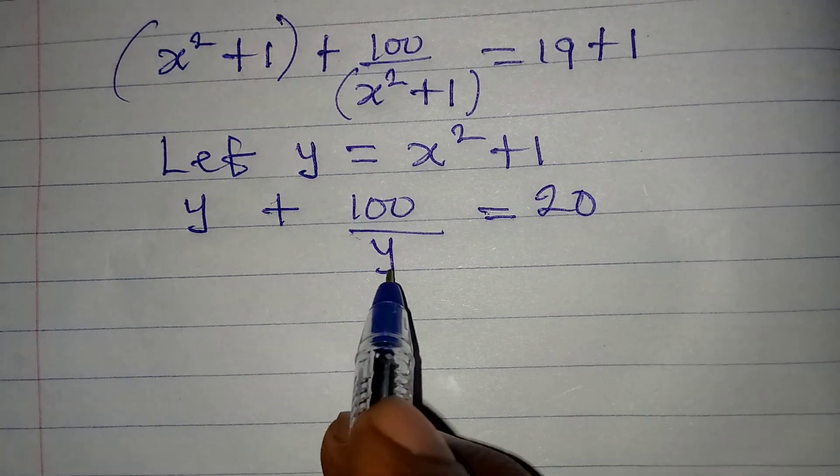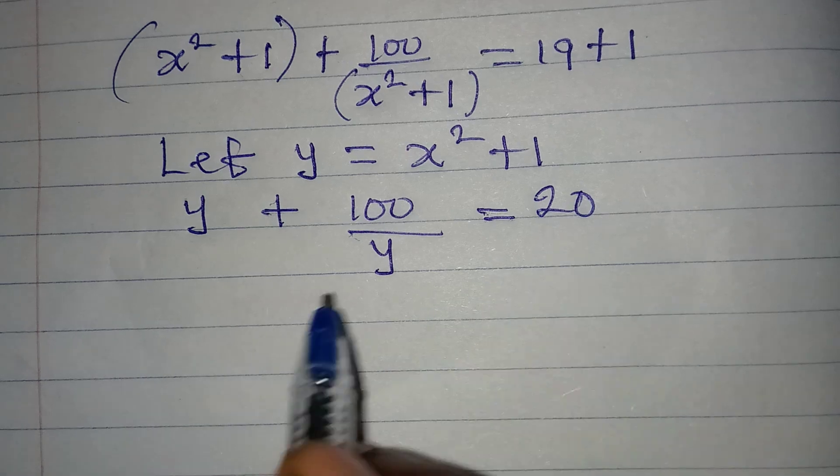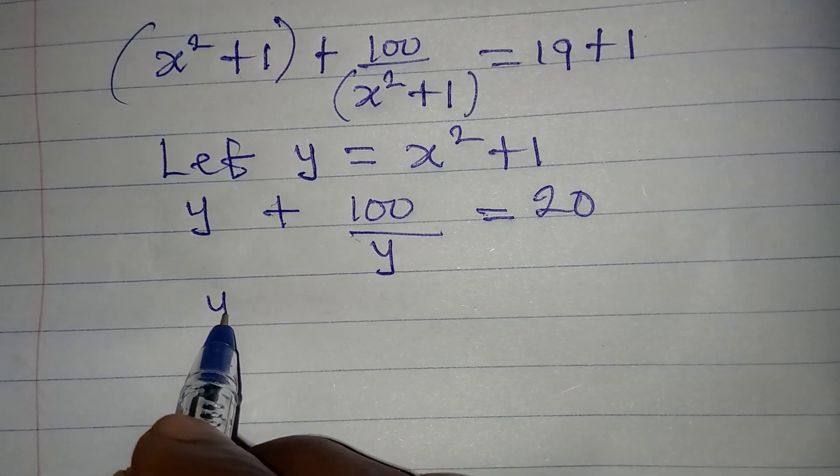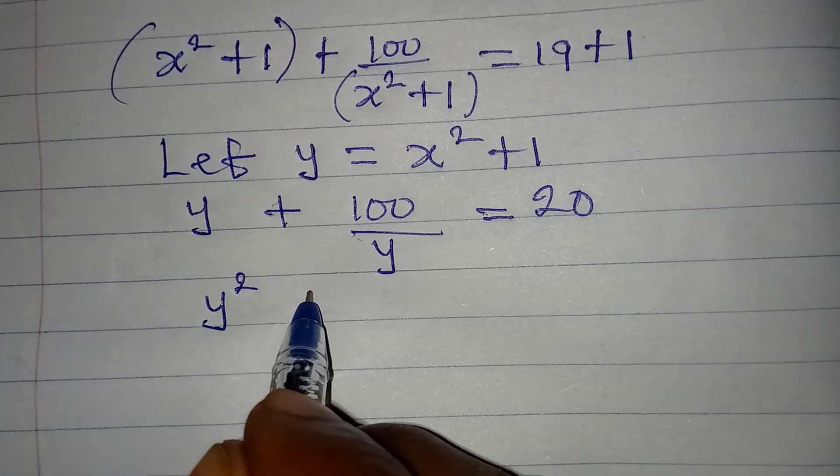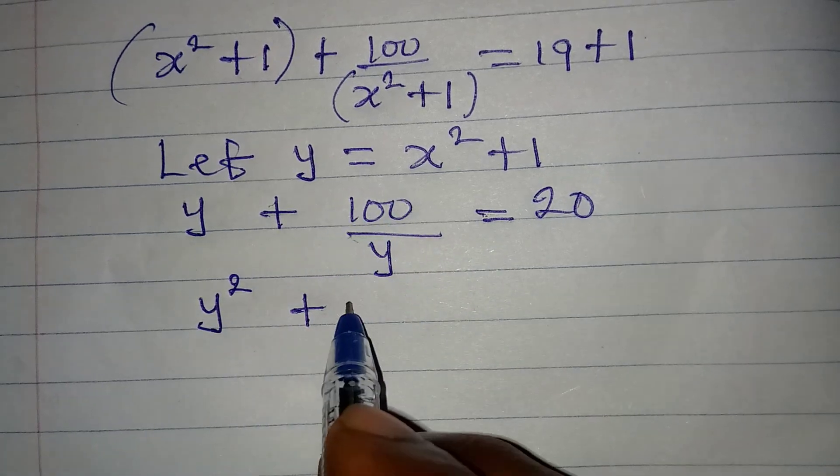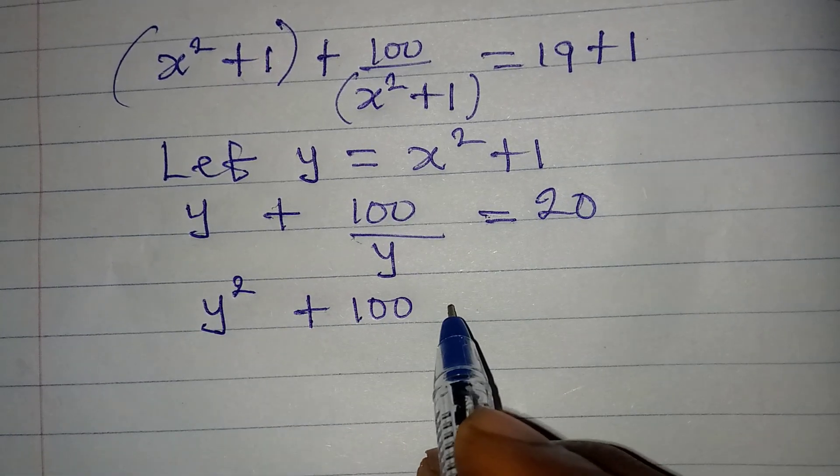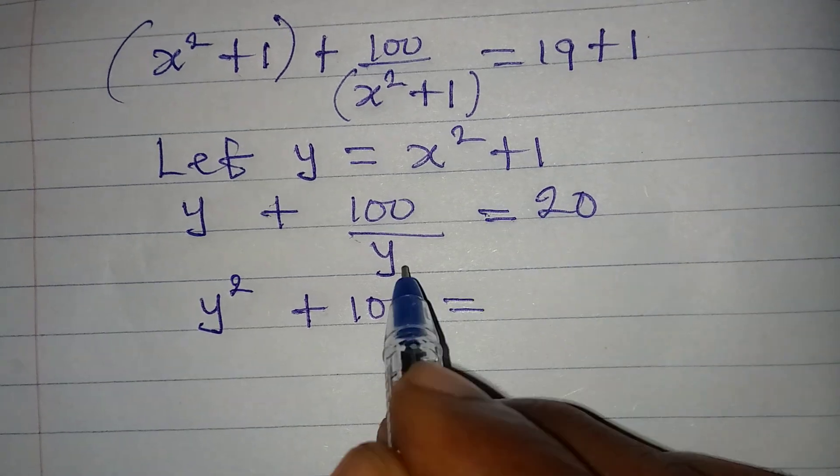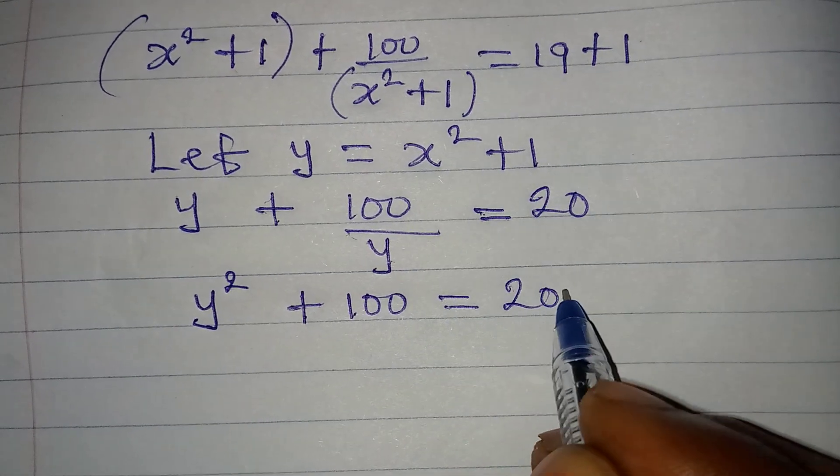So it's going to be y times y, which is y squared, plus y will cancel itself. From here we have 100, then this will be equal to 20 times y, which is 20y.